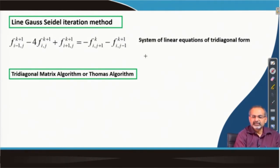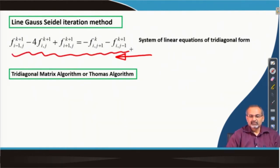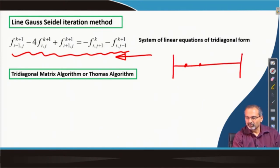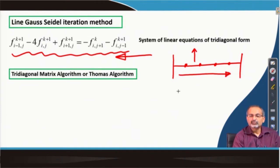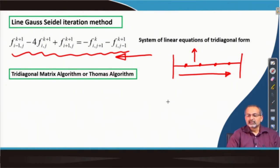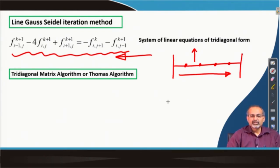Now that we understand the TDMA, we should be able to apply it to solve this system of linear algebraic equations. As we discussed, we would solve the problem line by line, sweeping the domain from bottom to top, or from west to east when sweeping column by column. The main message is that we could pick up a set of grid points lying along a particular line, disposed along the i or j direction, and solve the values of function f at all such grid points simultaneously through the TDMA.